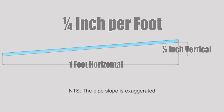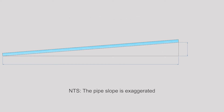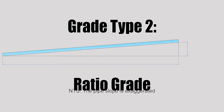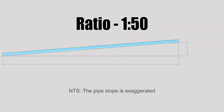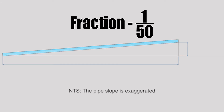Another type of grade that is exclusively used in the National Plumbing Code of Canada is ratio grade. Ratio grade can be expressed in a couple of different ways — the first type is the ratio 1 in 50, and the other type is the fraction 1 over 50. Both of those represent the same grade.